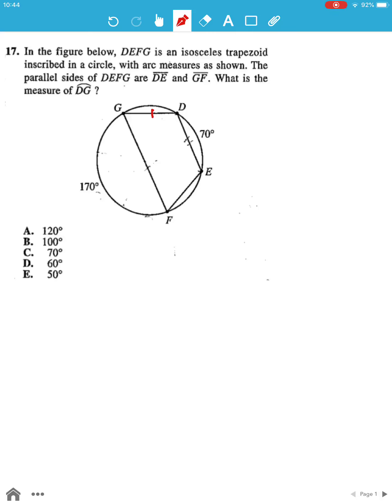For question number 17, DG and EF are equal since DEFG is an isosceles trapezoid, which means the arc DG would be equal to the arc EF. So we have DG is equal to EF.